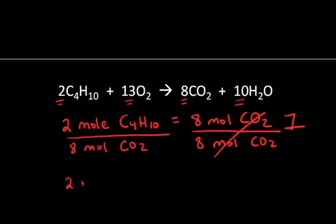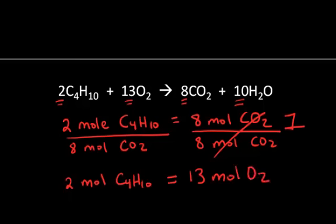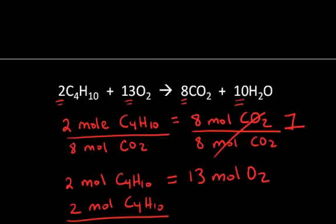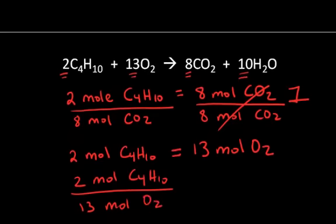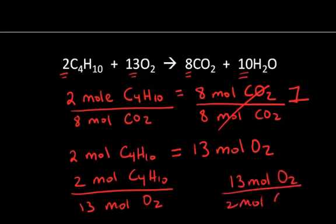For example, in this chemical change I know that every time I react two moles of butane, it's going to react away 13 moles of oxygen. So I can express the relationship as two moles of butane per every 13 moles of oxygen consumed. I can also divide both sides by the butane and end up with another per expression: 13 moles of oxygen per two moles of butane.